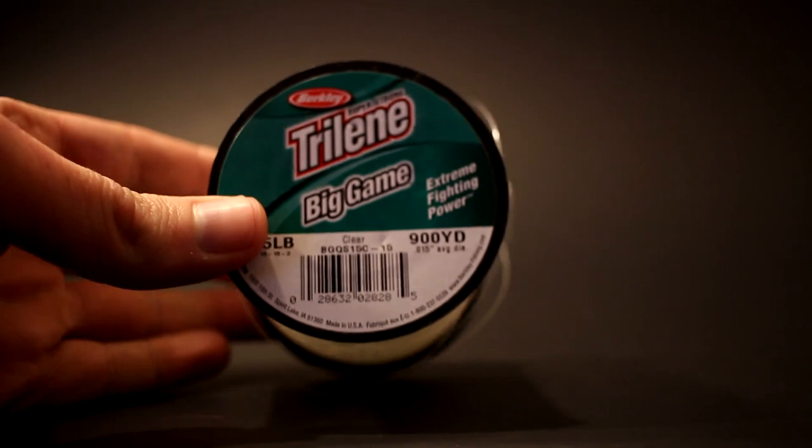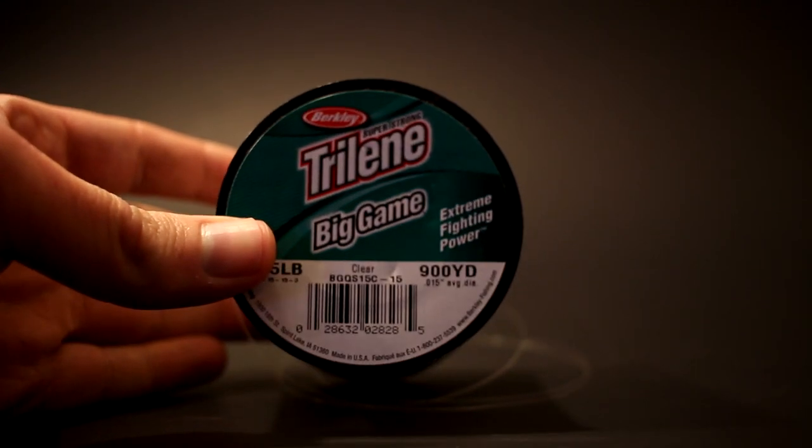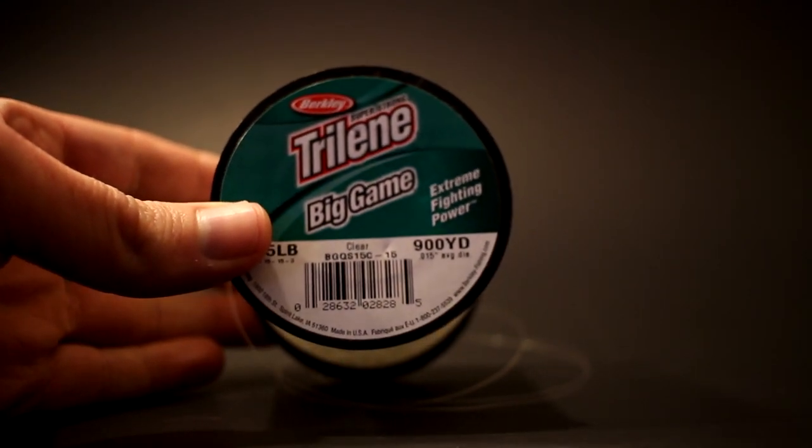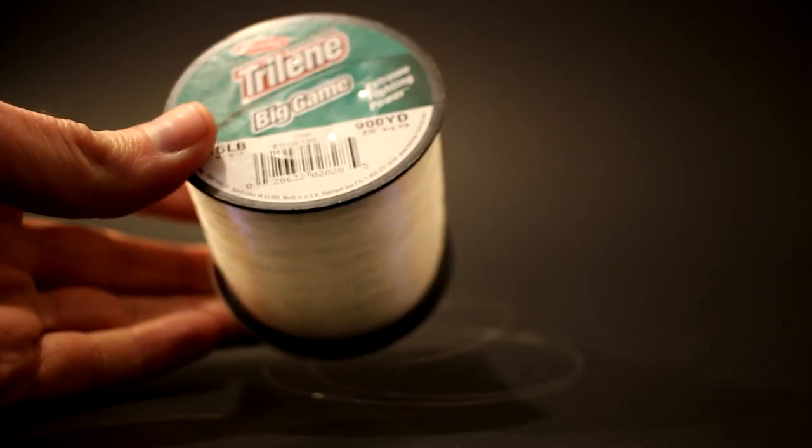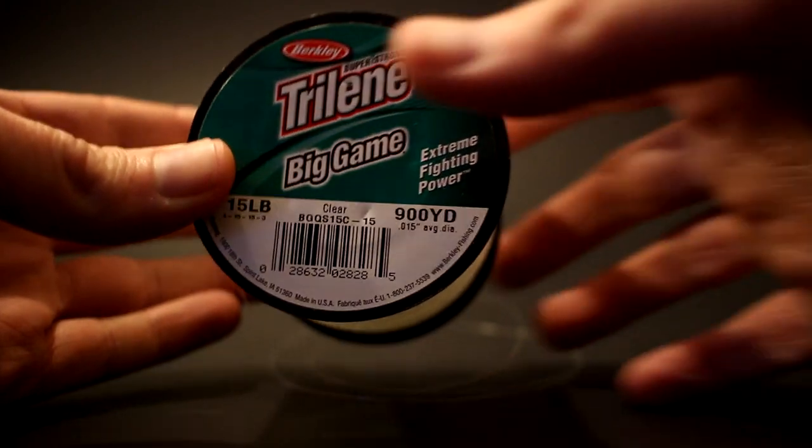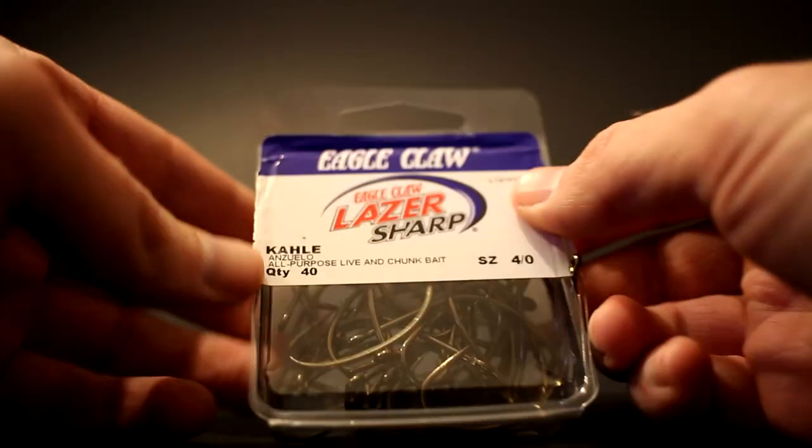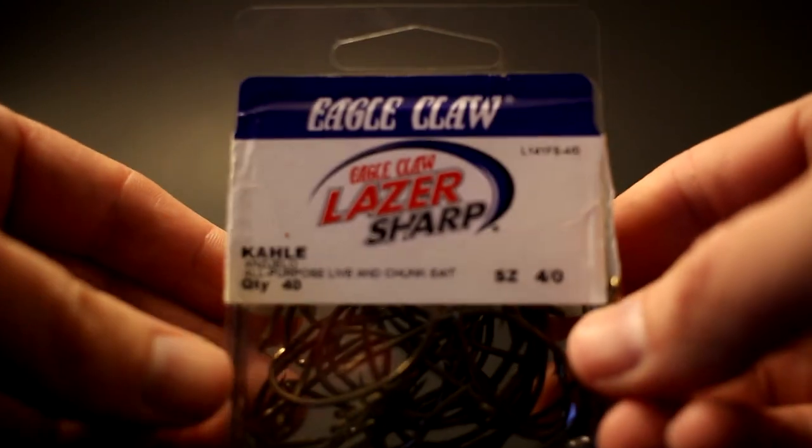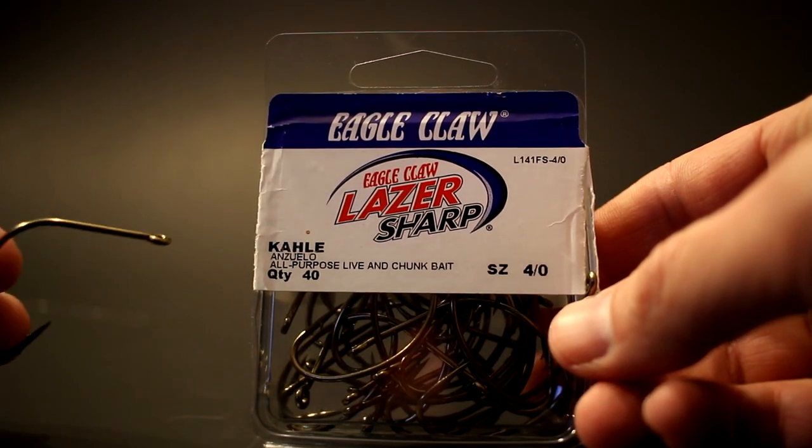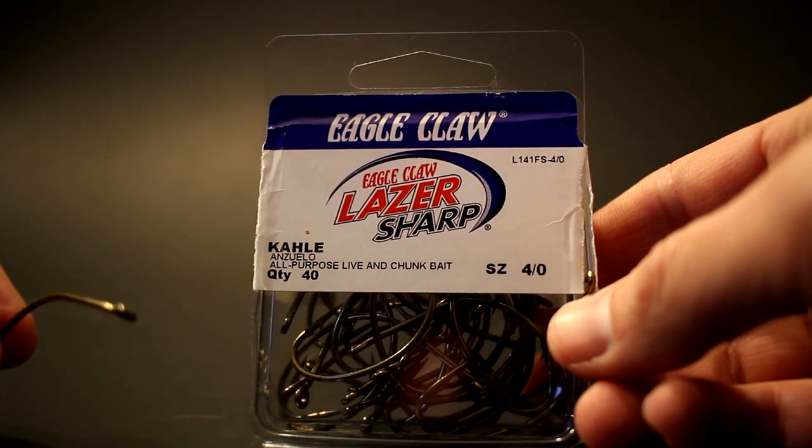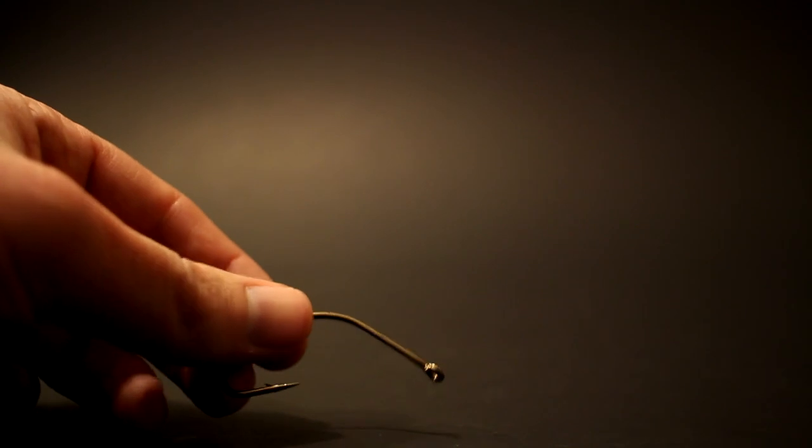Like my last rig video, we're just going to pick whatever is easy to find. You can choose whichever line you like, whether it be mono, braid, fluorocarbon, anything you like to use can be used. And I just picked the kale hooks again, just because they show up on camera really nice, the brownish color, easy to see. Again, you can choose whichever you want to go fishing with.